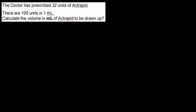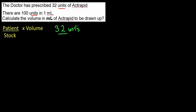Question three: the doctor has prescribed 32 units of actrapid. There are 100 units in one millilitre. Calculate the volume in millilitres of actrapid to be drawn up. We won't worry too much about these curious non-weight units — we'll just proceed. Using the formula: I want to give the patient 32 units, the stock is 100 units, and it's in 1 millilitre.